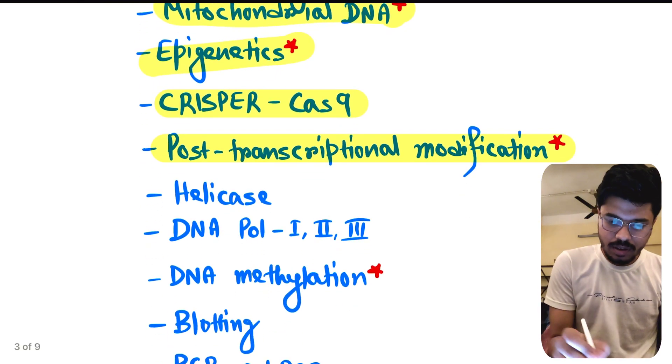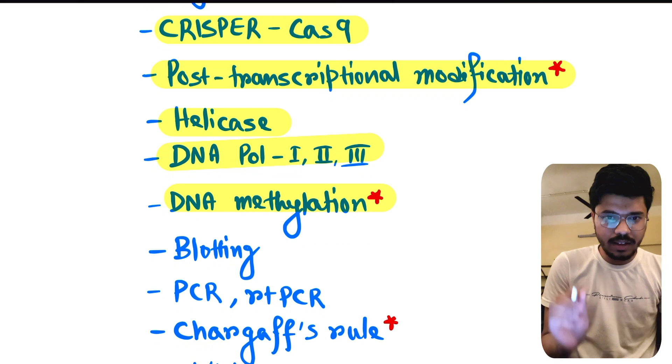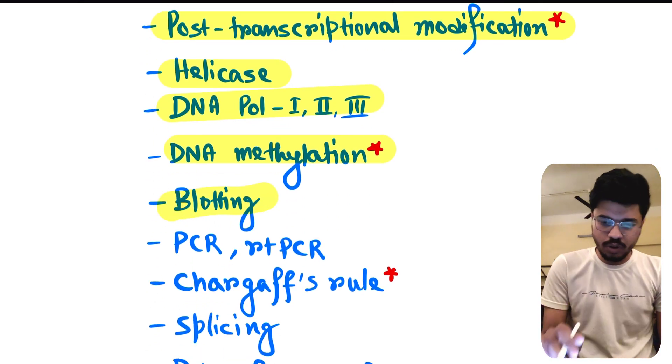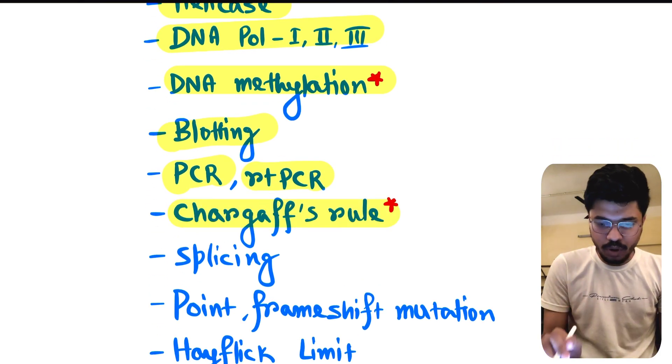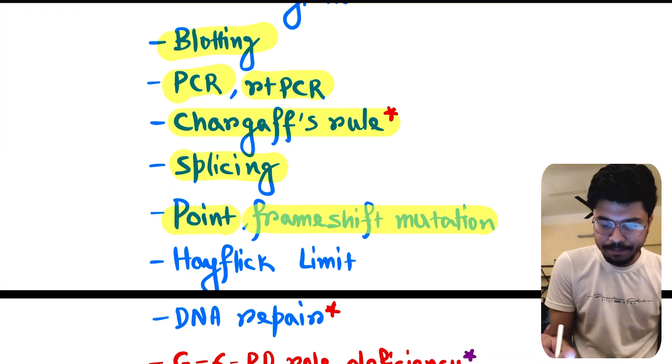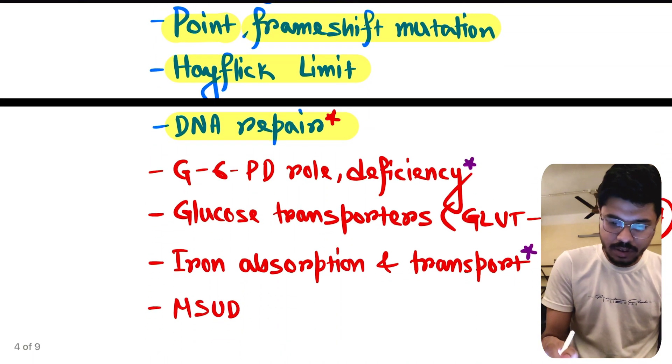Helicase, DNA polymerase 1, 2, 3, DNA methylation, again important. Blot blot blot, Northern blot, PCR, RT-PCR, Chargaff's rule, again important. Splicing, RNA splicing, point mutation, frameshift mutation, helicase limit, DNA repair, again important topic.